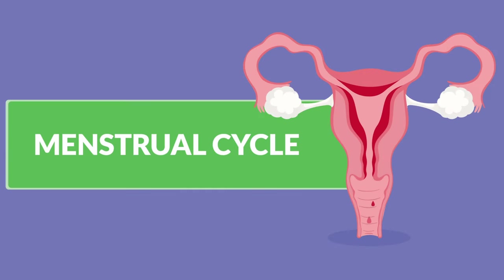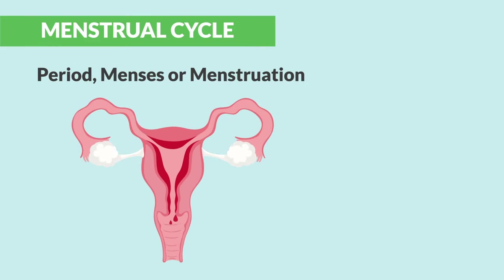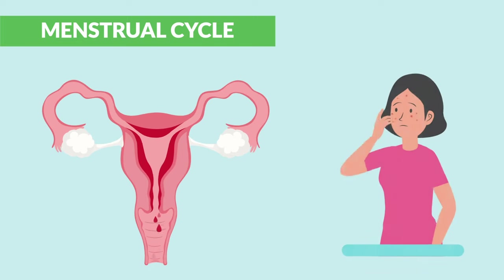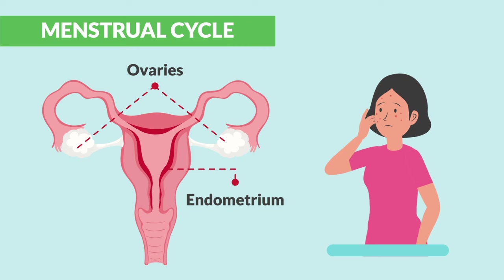The menstrual cycle is the next topic. This is also called a period, menses, or even menstruation. This is a cycle of changes that happens every month with female reproductive organs, specifically in the endometrium and the ovaries.